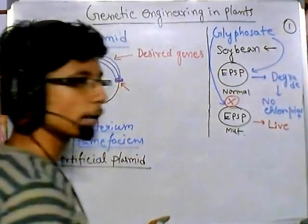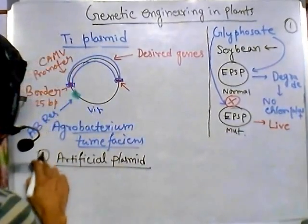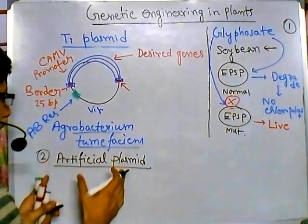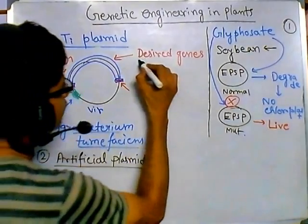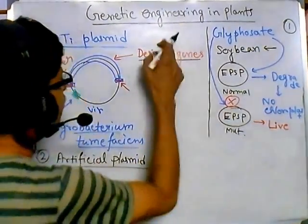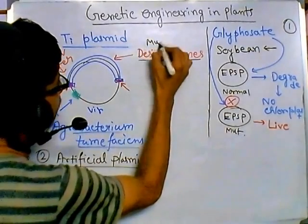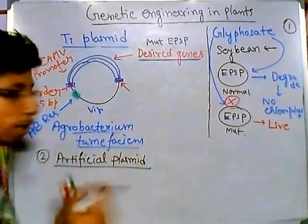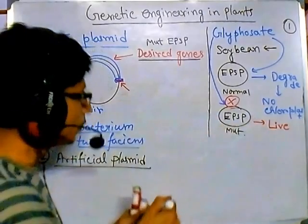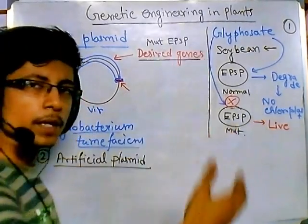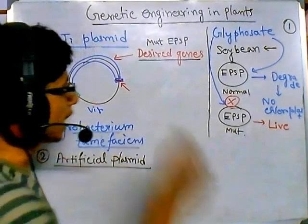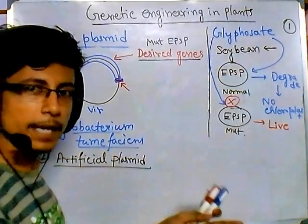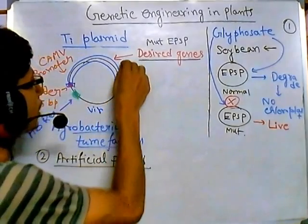Once we understand the problem, the second step is artificial plasmid design. We take our desired gene — the mutated form of EPSP — and build the artificial plasmid with it. Once the plasmid is ready, we transfer it to the plant. We do this via the natural process: we plant soybean plants in the ground, add the engineered bacteria near wounds, and the bacteria pass through the wounds and transfer the Ti plasmid. The plant will receive this desired EPSP gene.